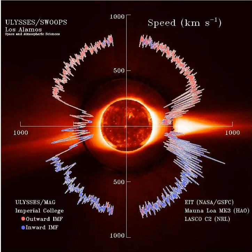The solar wind is a stream of charged particles released from the upper atmosphere of the sun, called the corona. This plasma consists of mostly electrons, protons and alpha particles with kinetic energy between 0.5 and 10 keV. Embedded within the solar wind plasma is the interplanetary magnetic field.